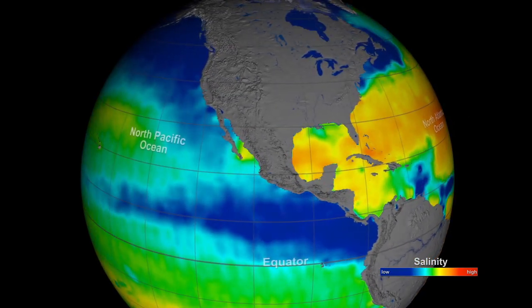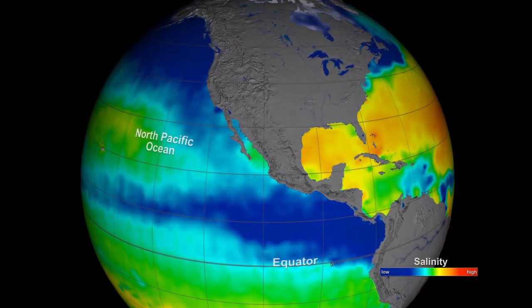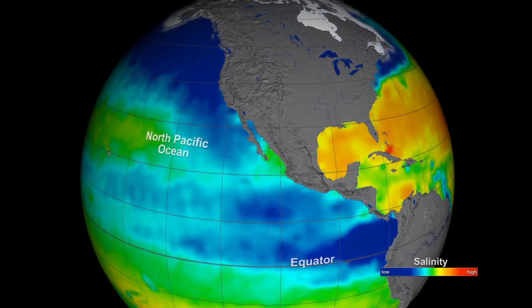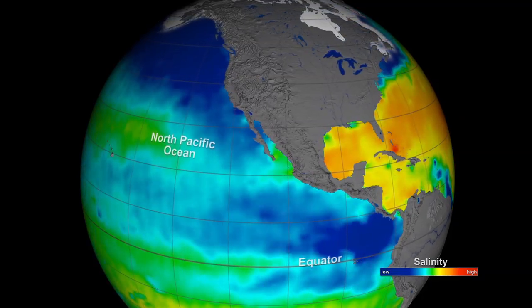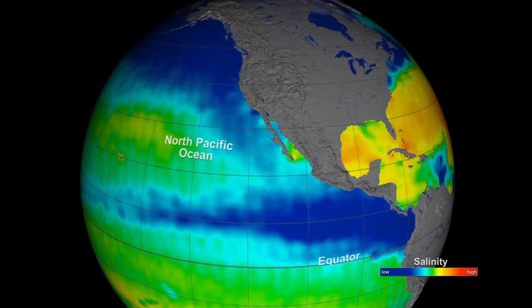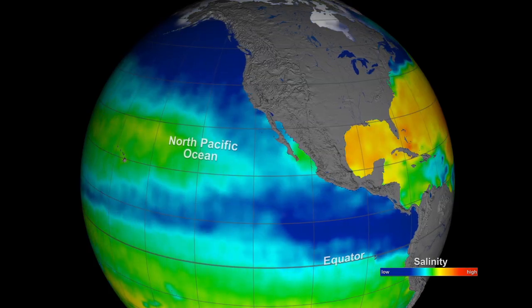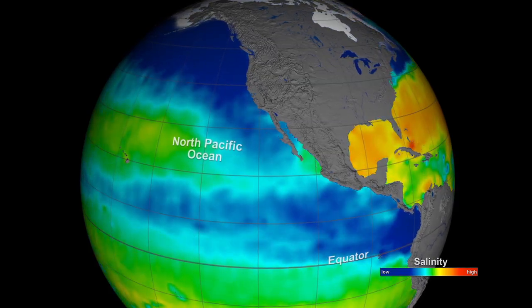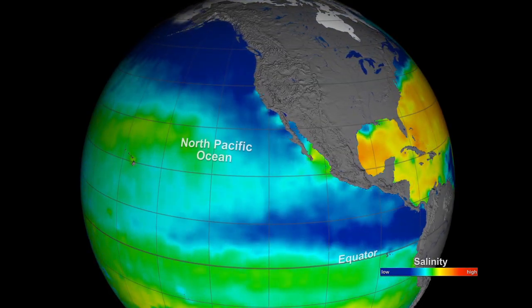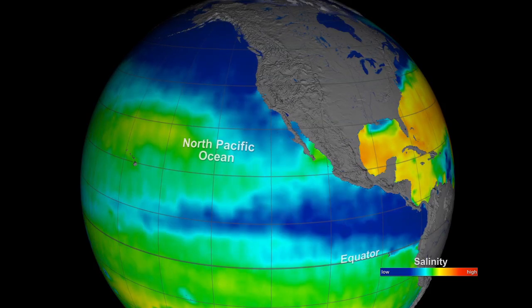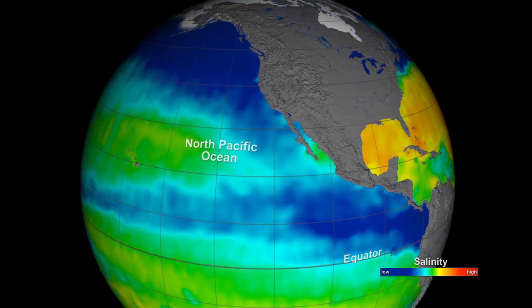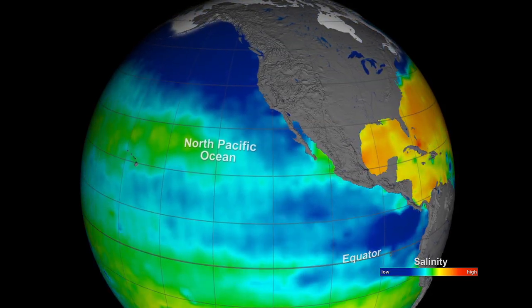Conditions are different in the North Pacific Ocean. Near the equator, in one of the wettest regions on the planet, heavy rainfall adds an abundance of water to the sea surface. This results in the dark blue band of low salinity water off the coast of South America and Central America.